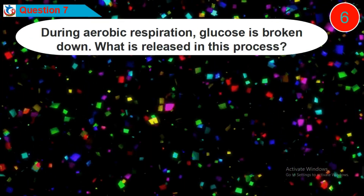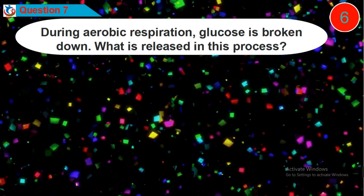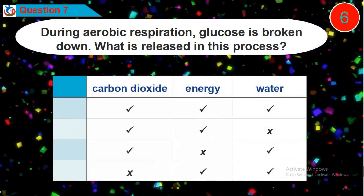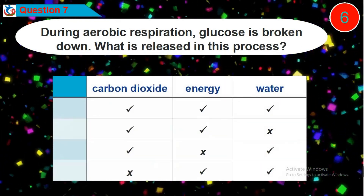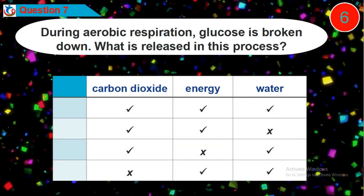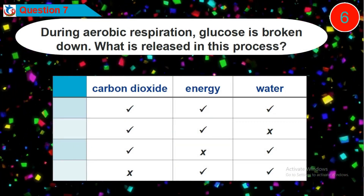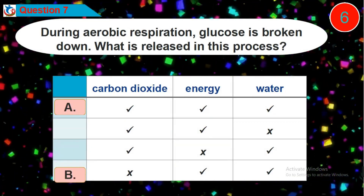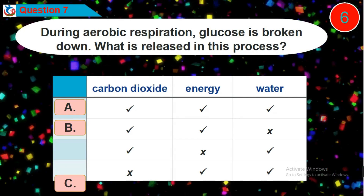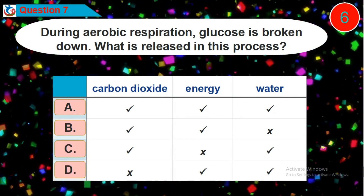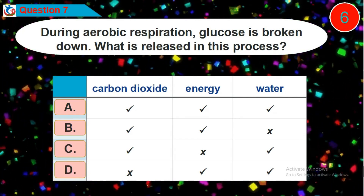Question 7: During aerobic respiration, glucose is broken down. What is released in this process? Is it option A, B, C, or D?